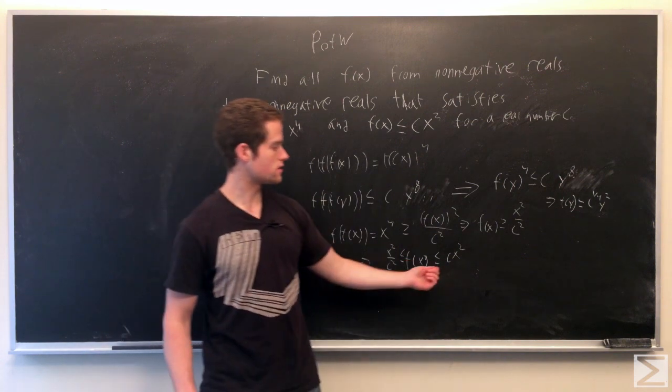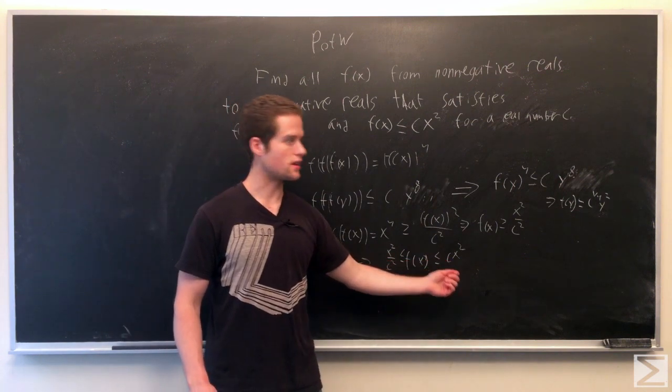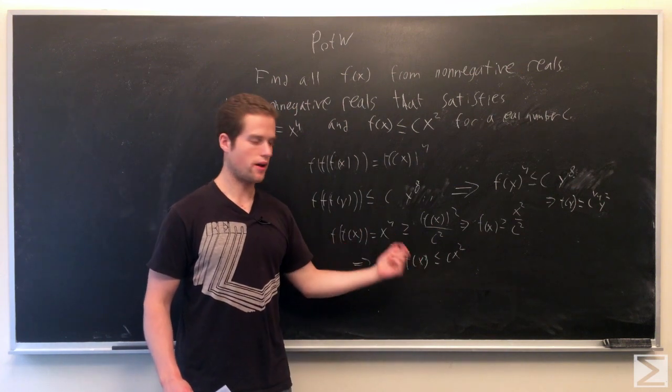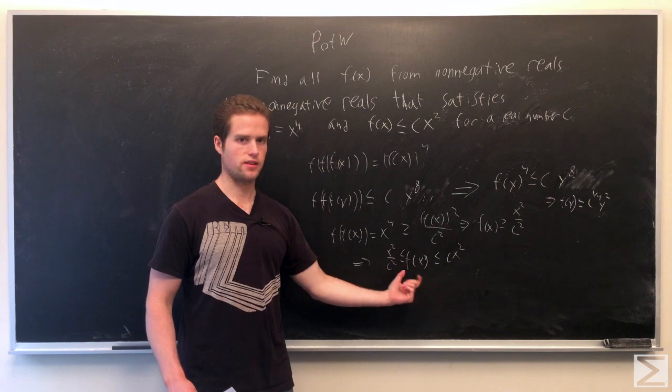And also note, since if our bound is satisfied for c, it's satisfied for c to the 1 4th. And for any constant c, if we keep changing the 4th powers, these bounds become arbitrarily tight.